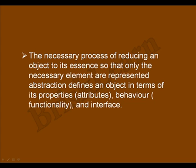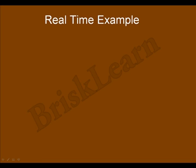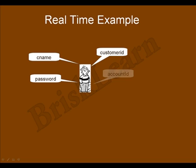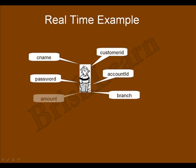Let's put this definition aside for now, come up with an example, and then map the example back to the definition. Let us take the customer example as usual. Customer requirements from the customer side are: customer ID, customer name, password, account ID, branch, amount, and address. From these requirements I am trying to identify three classes mainly.